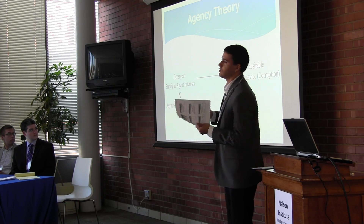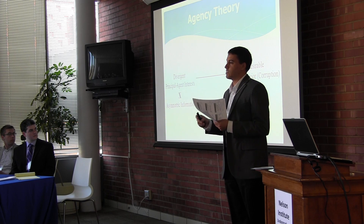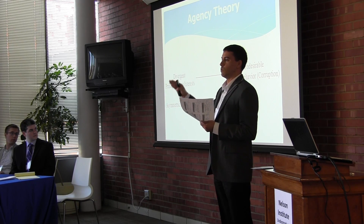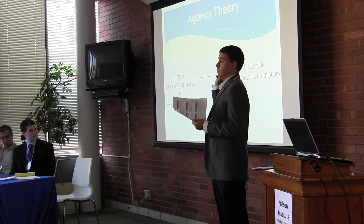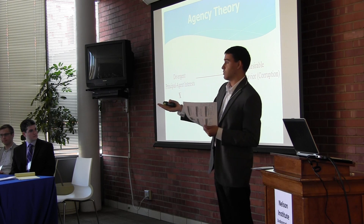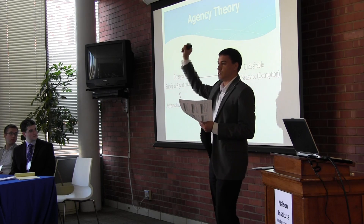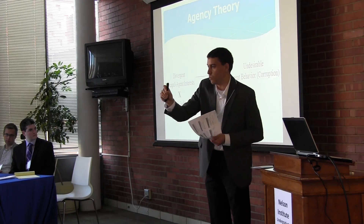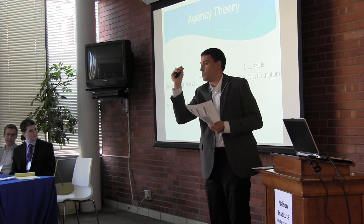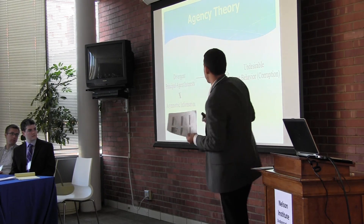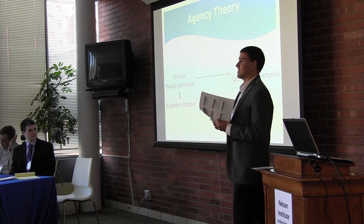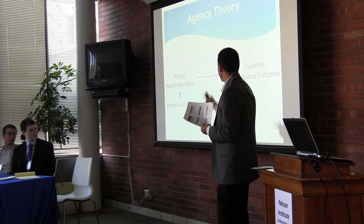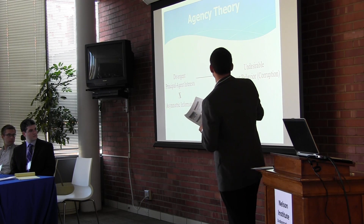Agency theory looks at actors and classifies them as either principals or agents. Simply put, one can think of employers and employees: employers delegate certain responsibilities to employees and expect them to behave in a certain way. Similarly, in principal-agent theory, a principal delegates responsibilities to a specified agent, who acts on behalf of the principal in accordance with that principal's interests and wishes. Agency theory says that in practice, this often doesn't happen because agents have their own interests, creating a divergence between what the principal wants and what the agent wants.